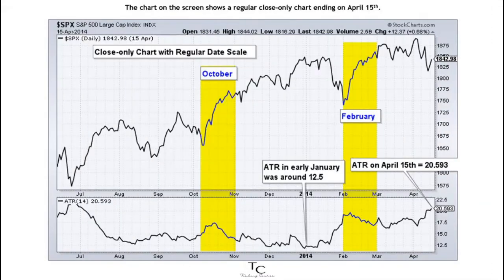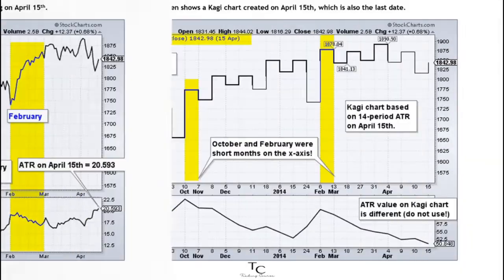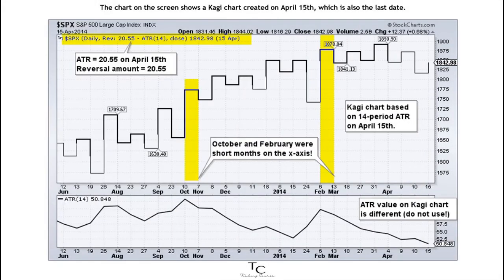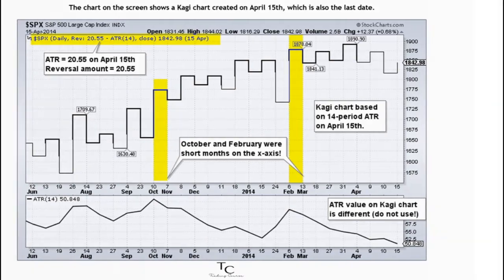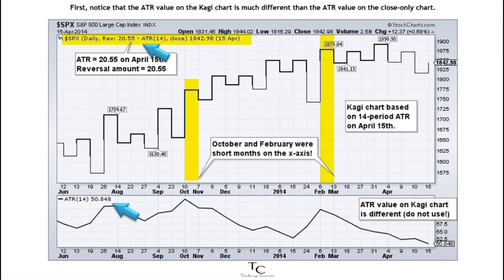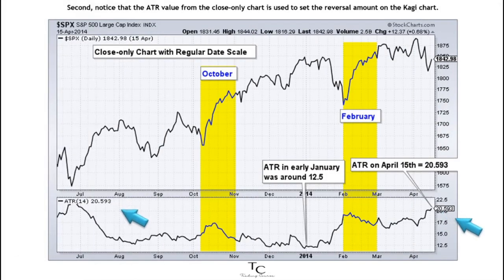The chart on the screen shows a regular close-only chart ending on April 15. The chart on the screen shows a CAGI chart created on April 15, which is also the last date. First, notice that the ATR value on the CAGI chart is much different than the ATR value on the close-only chart. Second, notice that the ATR value from the close-only chart is used to set the reversal amount on the CAGI chart.